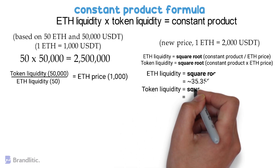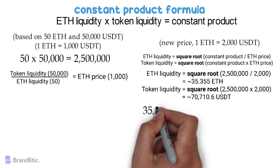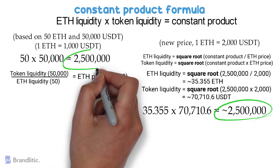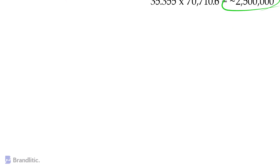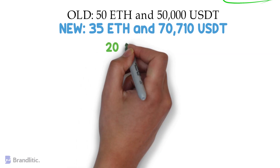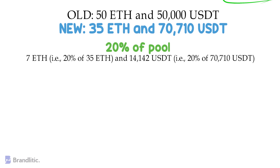On applying the data from our example along with the new price of 2000 USDT per Ethereum, we get approximately 35.355 Ethereum and approximately 70,710 USDT. We can confirm the accuracy of this using the constant product equation, which still arrives at the same constant product of 2.5 million. Hence, after the price changes — assuming all factors remain constant — the pool will have roughly 35 Ethereum and 70,710 USDT, compared to the original 50 Ethereum and 50,000 USDT. If at this time the liquidity provider wishes to withdraw their assets, they will exchange their LP tokens for their 20% share, taking 7 Ethereum (20% of 35) and 14,142 USDT (20% of 70,710).